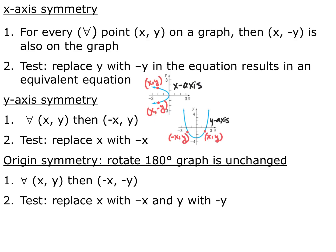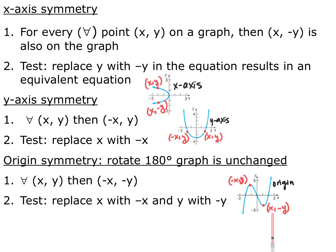For y-axis symmetry, for every point (x, y) on the graph, there's also (−x, y) — for every y-coordinate, both a positive x and a negative x exist. We test this by replacing every x with negative x and seeing if we get back to the original equation. For origin symmetry, for every (x, y), the point (−x, −y) also exists — both coordinates change signs. We replace both x and y with their opposites and see if the result simplifies to the original.